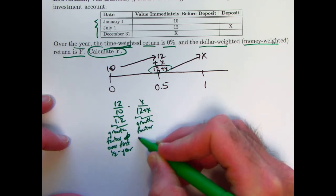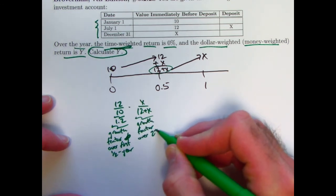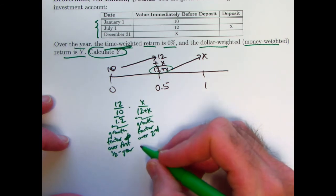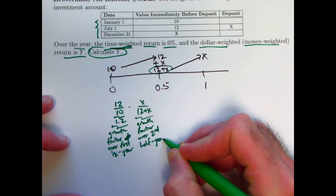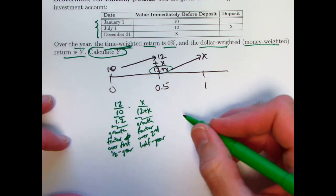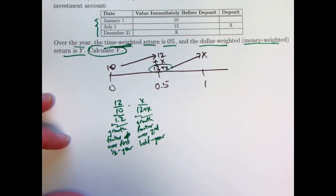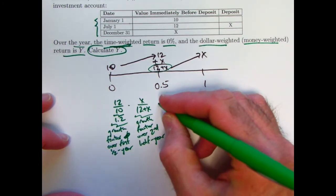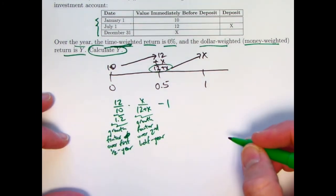I'm calling it growth factor, but it really is less than 1, and so in a sense it's also a decay factor. All right, the product of those two things is going to be the growth factor over the entire year. If I subtract 1 from that, that will be the time-weighted rate of return.